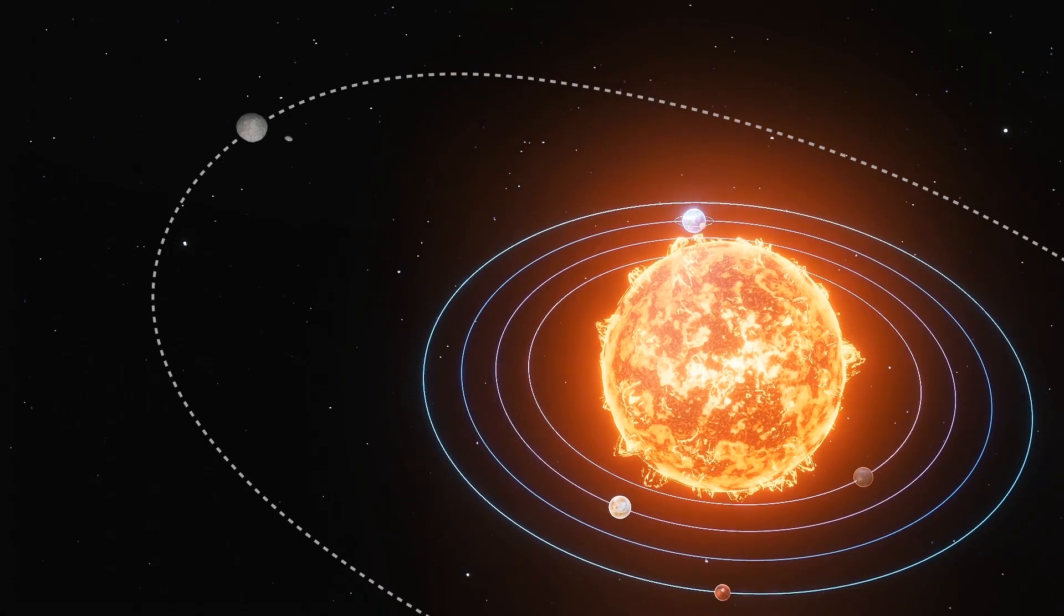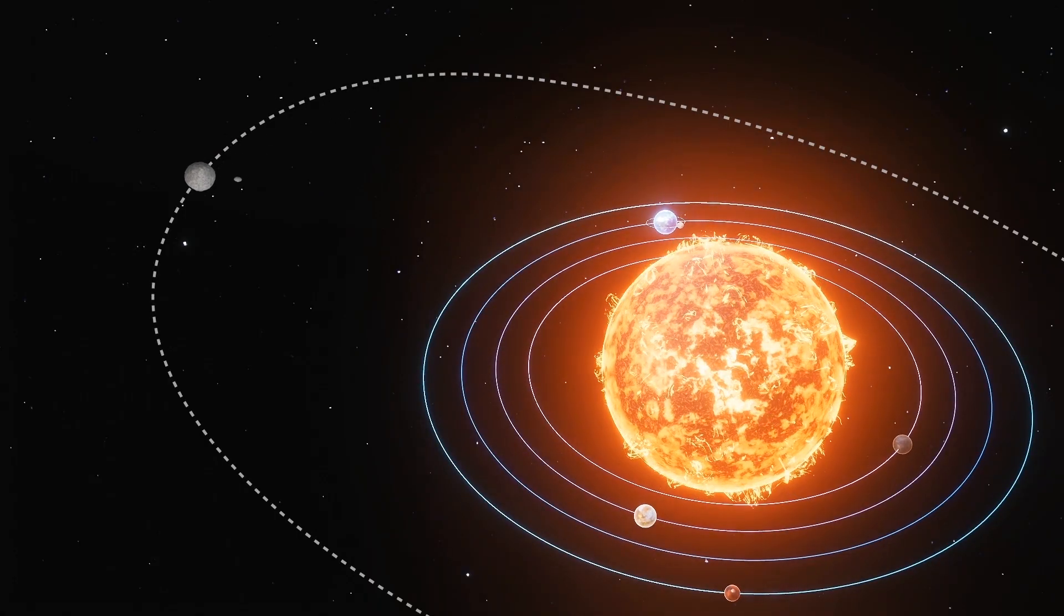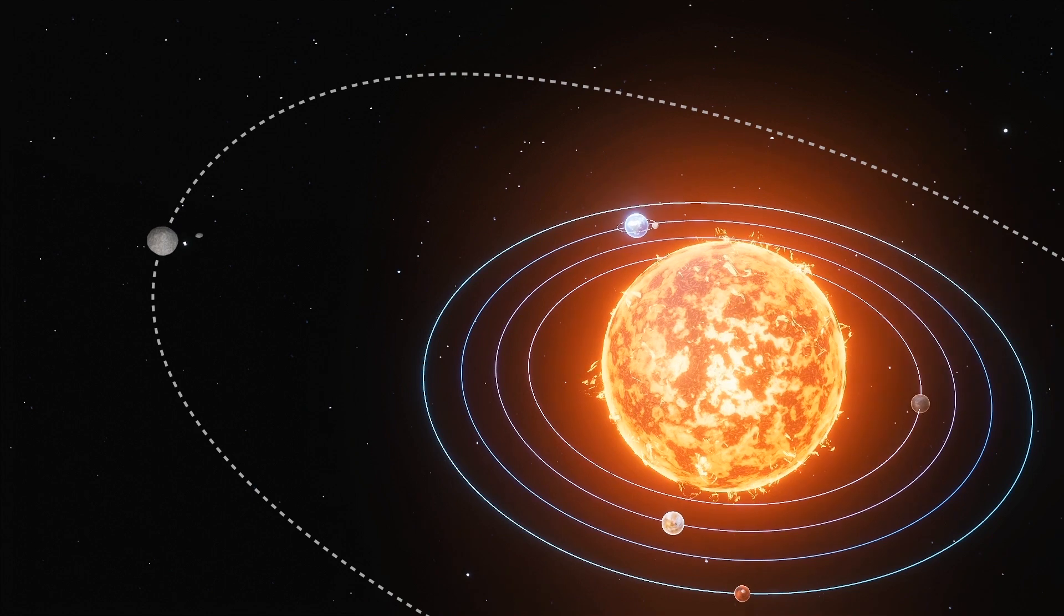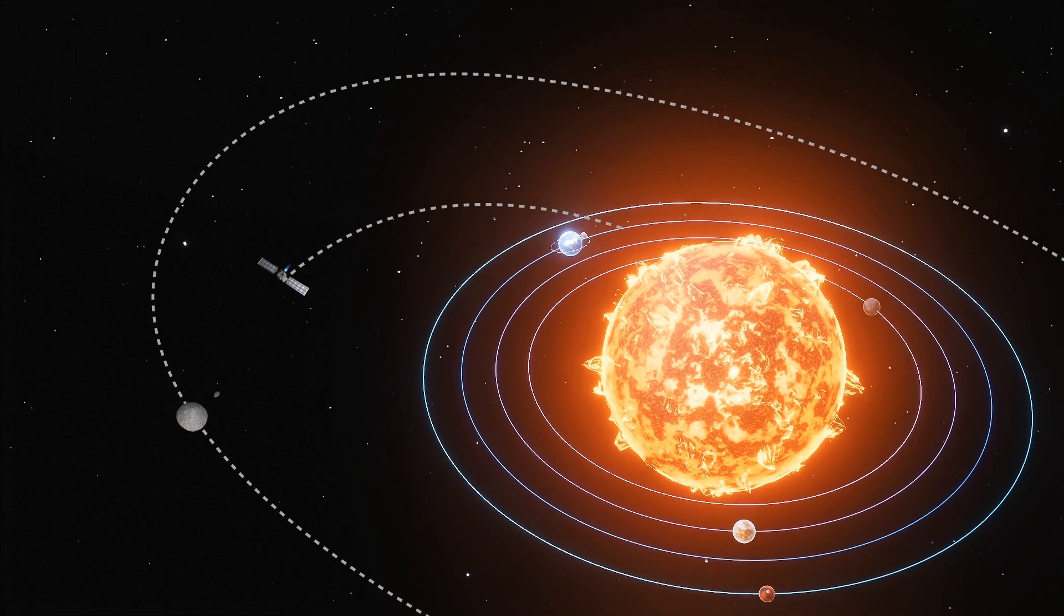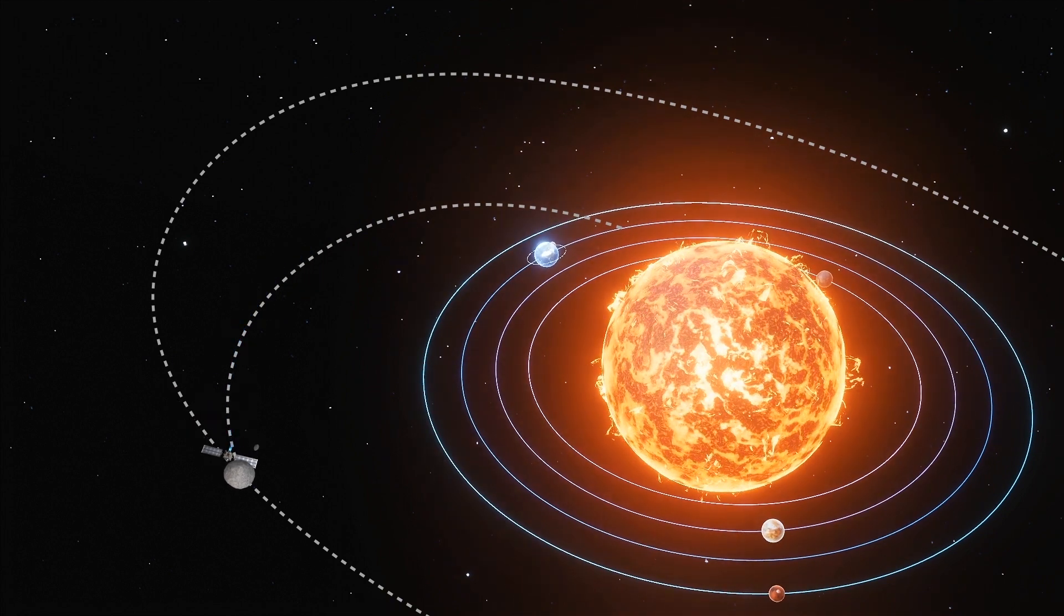NASA's mission is an asteroid impactor called DART, which stands for Double Asteroid Redirection Test. The refrigerator-sized spacecraft will launch in a window opening on July 22, 2021. It will reach Didymus in late September of 2022.